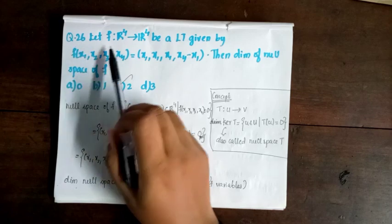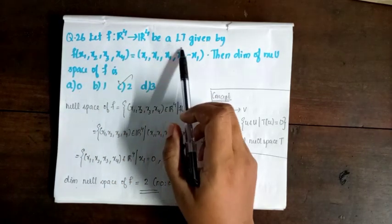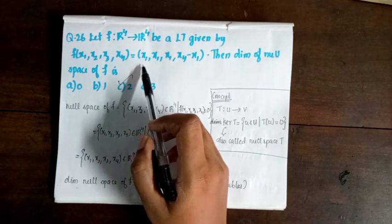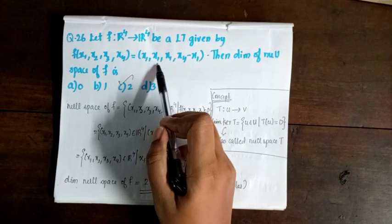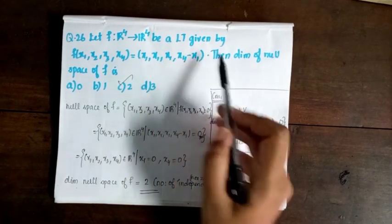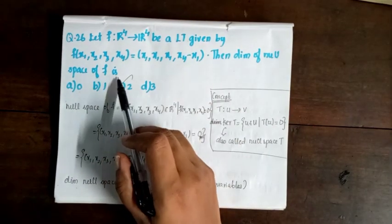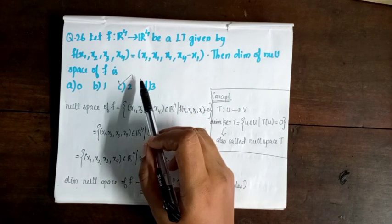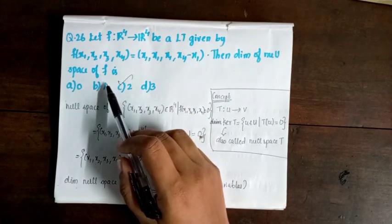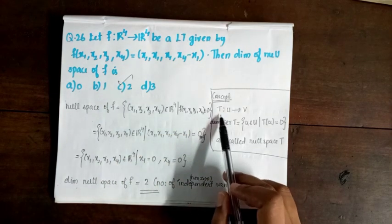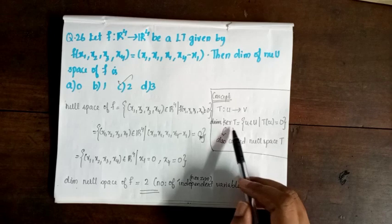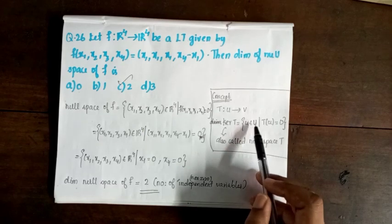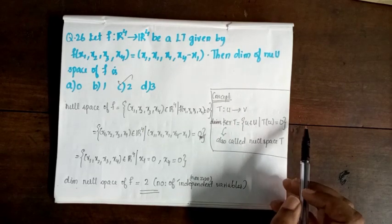Next question, 26. Let f: R⁴ → R⁴ be a linear transformation defined by f(x1, x2, x3, x4) = (x1, x1, x1, x4 - x1). Find the dimension of the null space of f. The null space (kernel) of f is the set of all vectors in R⁴ such that f(x1,x2,x3,x4) = 0.